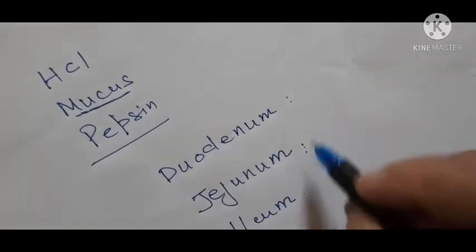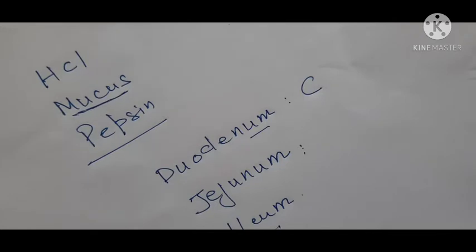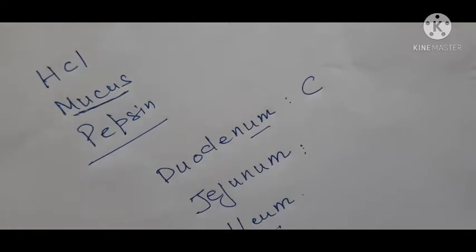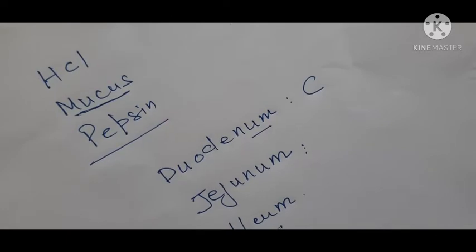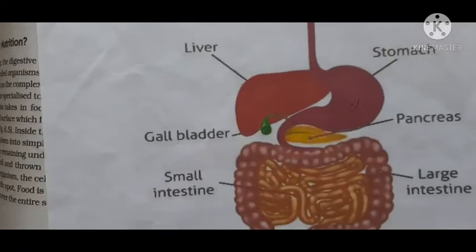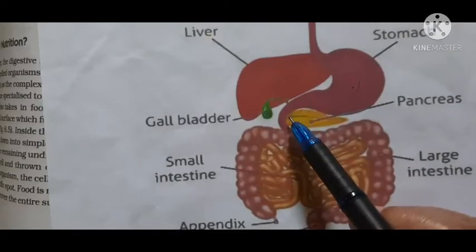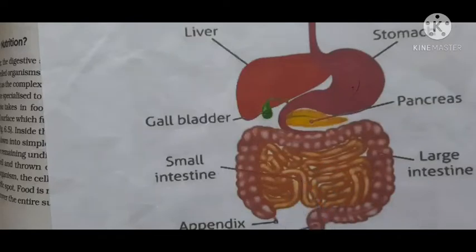The duodenum is the C-shaped part of the small intestine. The ileum is the last part where absorption of food takes place. In the small intestine, complete digestion of food takes place — carbohydrates like starch are digested to glucose, proteins to amino acids, and fats to fatty acids and glycerol.